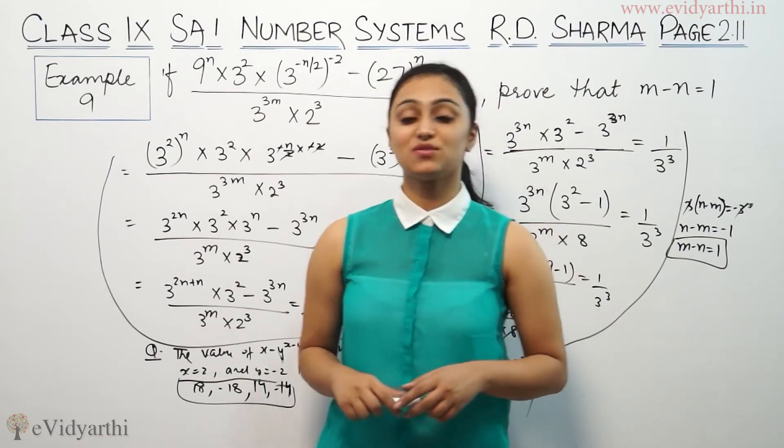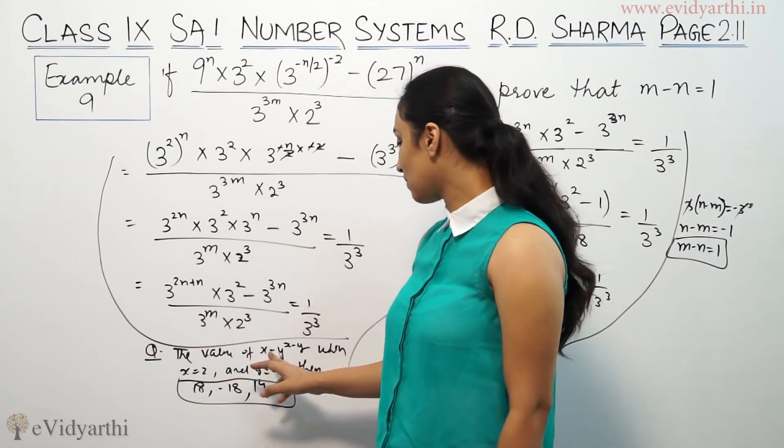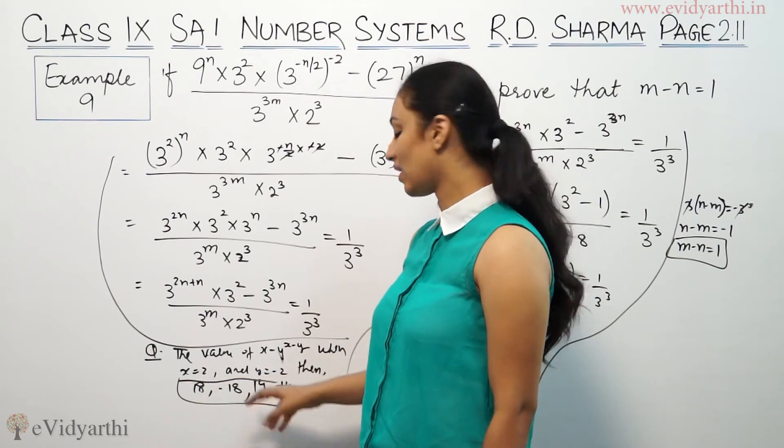18, minus 18, 14, minus 14. The value of x^(-y) when x is 2 and y is minus 2.